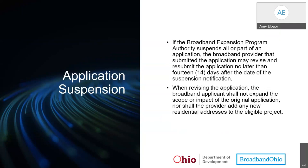If the Broadband Expansion Program Authority suspends all or part of an application, the broadband provider that submitted the application may revise and resubmit the application no later than 14 days after the date of the suspension notification. When revising the application, the applicant shall not expand the scope or impact of the original application, nor shall the provider add any new residential addresses to the eligible project.